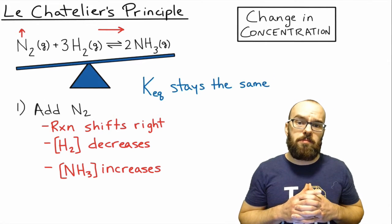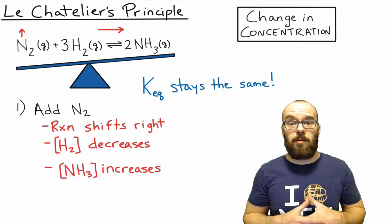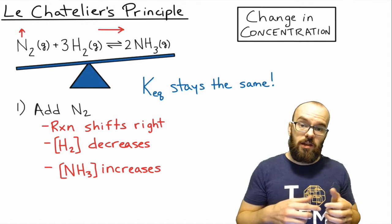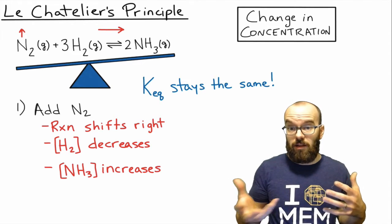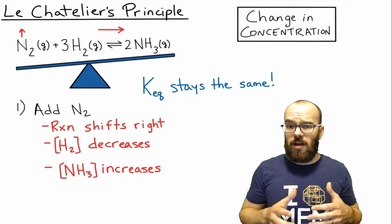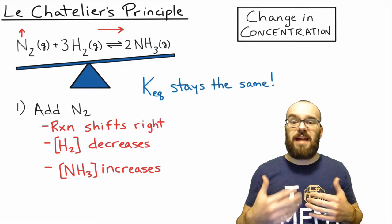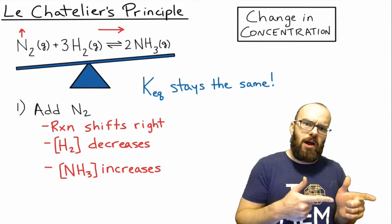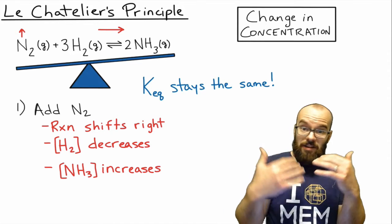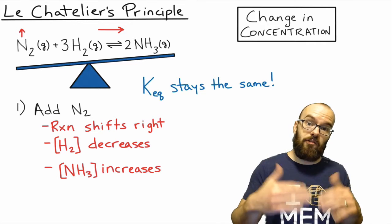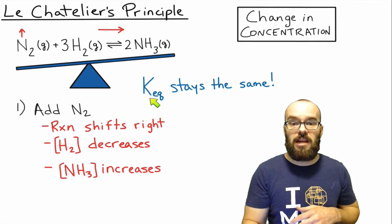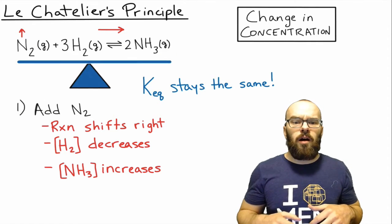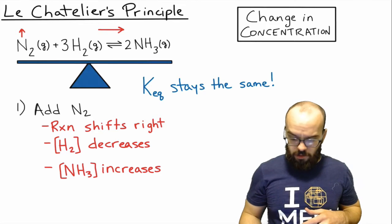An important thing to keep in mind: the K value, our equilibrium constant, is actually going to stay the same even though the reaction is shifting. That ratio of products over reactants stays the same — we added more reactants, but now we're forming more products, so it balances out. We end up with the same equilibrium constant K that we started with.